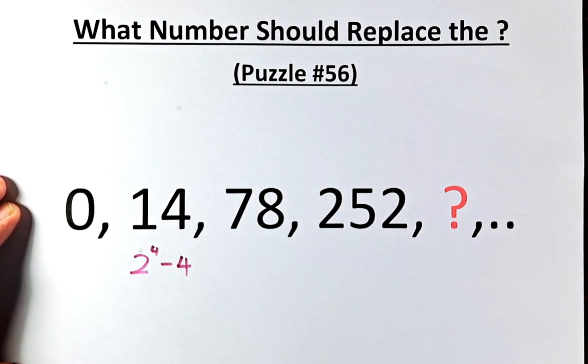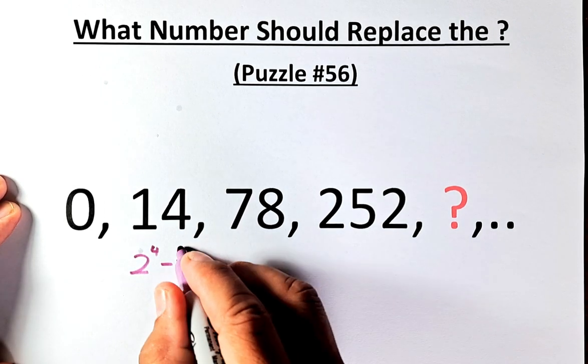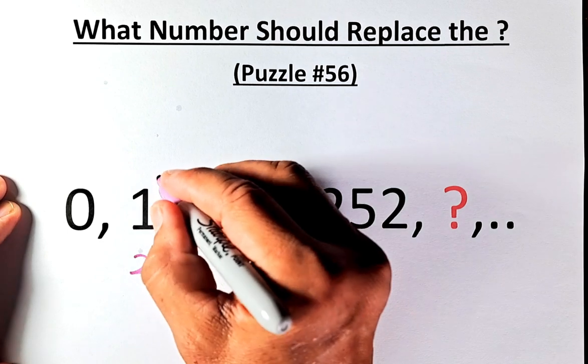14 is the same as 2 to the power of 4 minus 4. 2 power 4 is 2, 2, 2, 2, you multiply and it's going to be 16. 16 minus 2 is going to be 14.